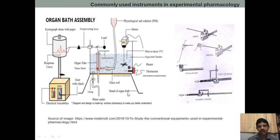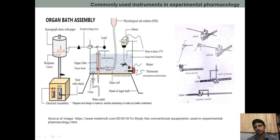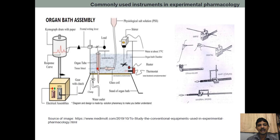There is also a thermostat to maintain the temperature, as some experiments require temperature maintenance. This is the organ bath chamber. These are the different types of levers used — simple lever, frontal lever, straw holder, hard stylet lever, and universal broad-based lever. These are the different instruments, or parts of the organ bath assembly. In your next semester, you will have these experiments, and we will discuss all those things in detail.